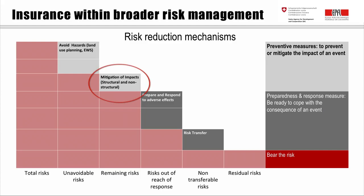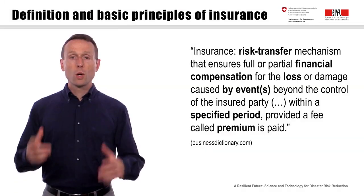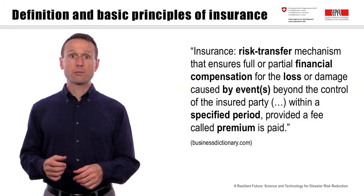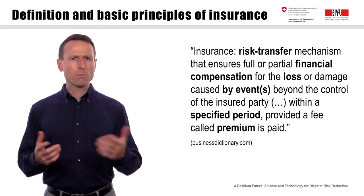Second, we can reinforce dams so that in the case of a flood, the impact is lower than when we had not improved it. Third, we can prepare for the flood event and plan what to do in case the flood occurs. Finally, we can take out insurance and by doing so transfer at least part of the remaining risk to a third party. With this final step, we have introduced insurance into the disaster risk management area.